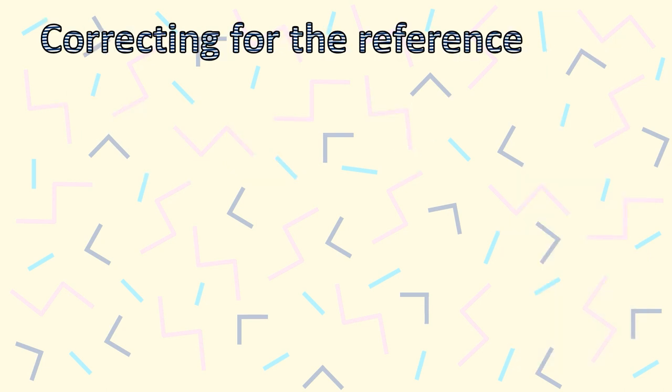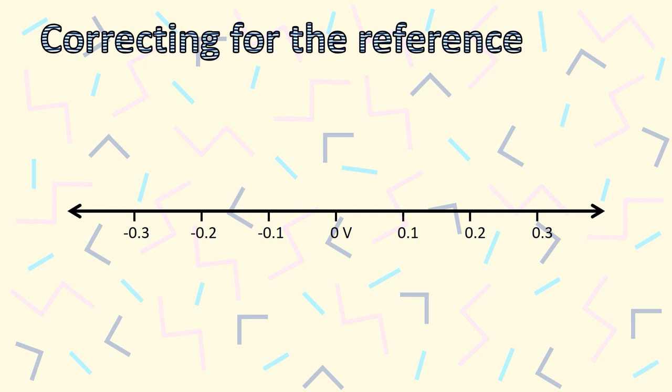Forgetting to correct for the fact that the reference electrode has a non-zero value is a common mistake. Let me explain using a number line. The units of this number line will be potential.